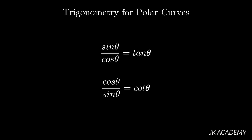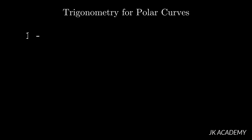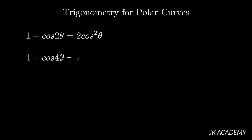Now we look at the special formulas — we'll call these half-angle formulas. The first is: 1 plus cos 2 theta is equal to 2 cos squared theta. We call this a half-angle formula because the angle on the LHS is 2 theta, and on the RHS it becomes theta — every angle on the LHS becomes half on the RHS. So 1 plus cos 4 theta equals 2 cos squared 2 theta, and 1 plus cos theta equals 2 cos squared (theta by 2).